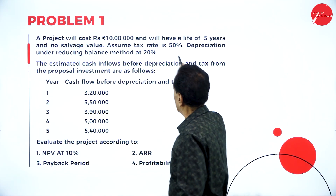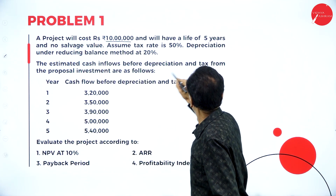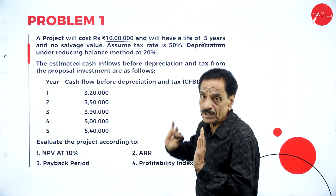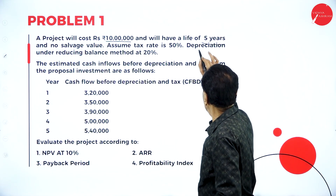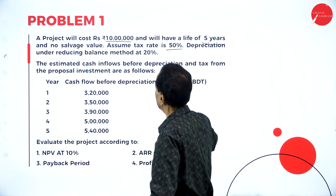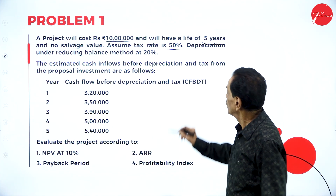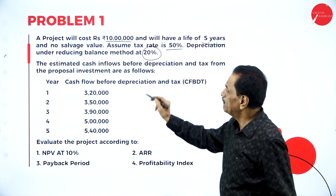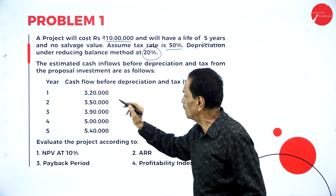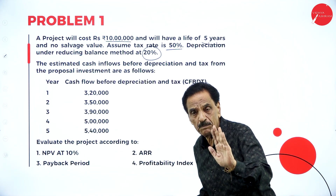A project will cost rupees 10 lakh and will have a life of five years with no salvage value. The tax rate is 50 percent and depreciation is under the reducing balance method at 20 percent. The estimated cash inflow before depreciation and taxation for the proposed investment is given.